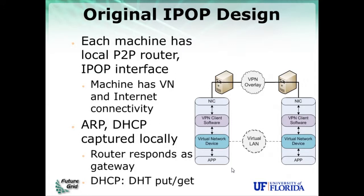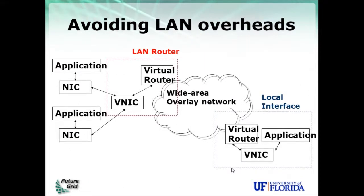Looking back at the IPOP design, each node runs the IPOP router locally and has a local virtual network interface — a TAP interface. This local IPOP router is responsible for capturing ARP requests or DHCP requests and serves as a gateway to the IPOP overlay. To support overlay bypass, we expand on this architecture, allowing the separation of the router from the virtual machines running applications.